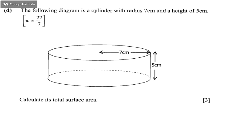Question 1d is as follows: the diagram shows a cylinder with a radius of 7 centimeters and a height of 5 centimeters. Take pi to be 22 over 7. Take time to study the diagram, note those measurements, and then we go to the actual question.